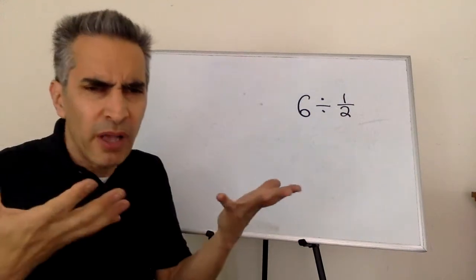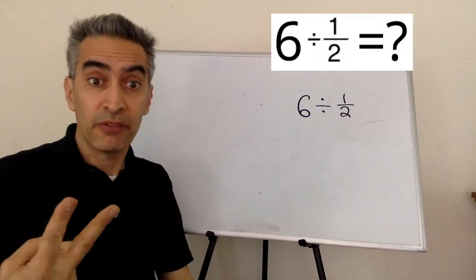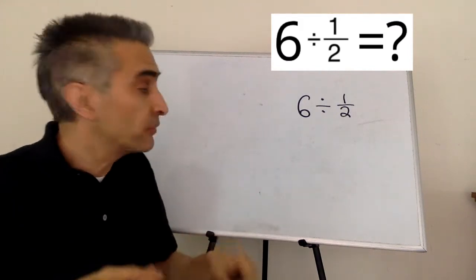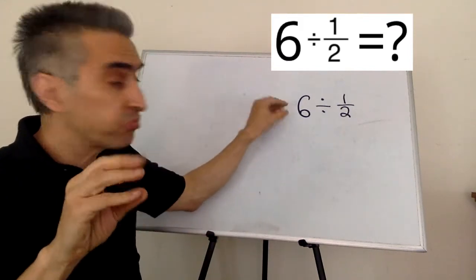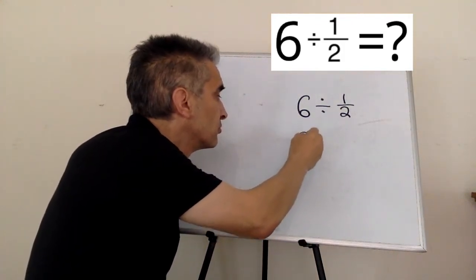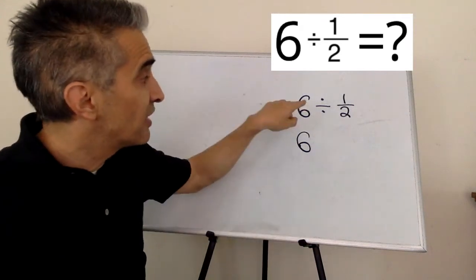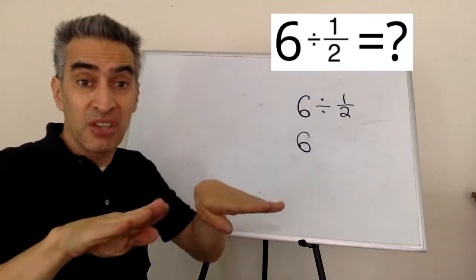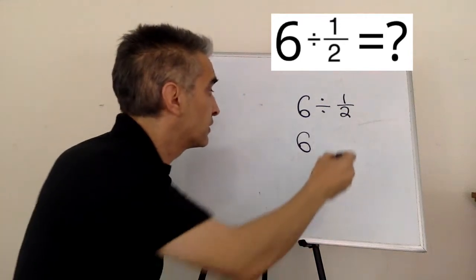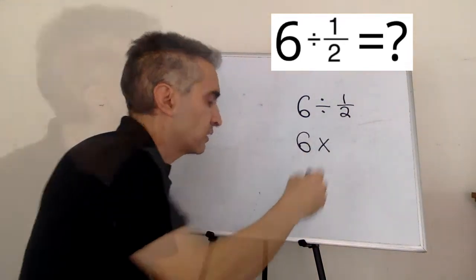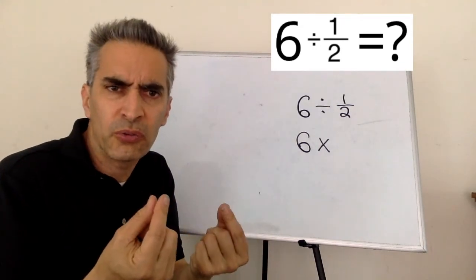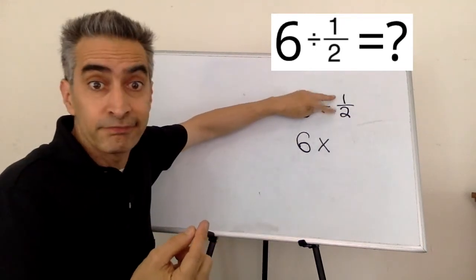Our example problem is six divided by one-half. What are we going to do? The six, I'm going to put it right here. And this division sign is going to become multiplication. This one-half, what are we going to do with this? Well, we're just going to flip it.